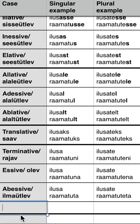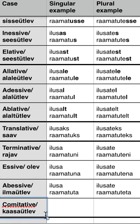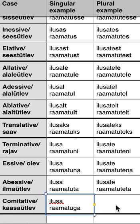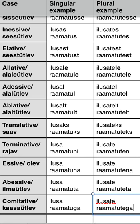And our last case would be COMITATIVE — in Estonian it's 'kaasaütlev'. We add 'ka': 'ilusa raamatuka'. In the plural: 'ilusate raamatuteka'. An example sentence: 'I always travel with my beautiful book' — 'Ma alati reisim koos oma ilusa raamatutega'.